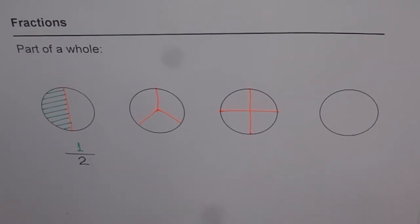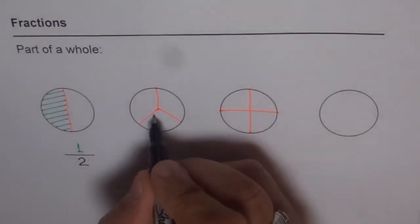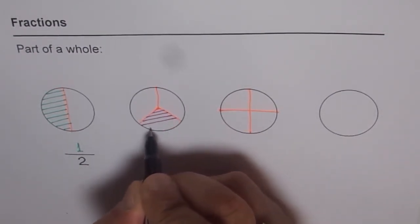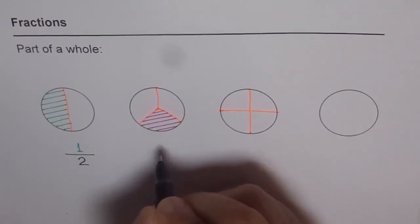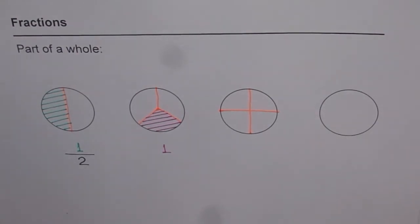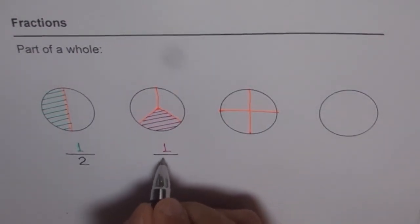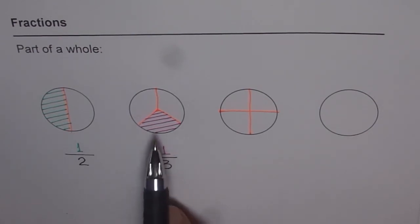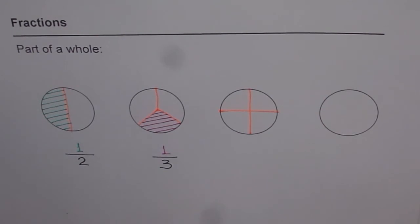Now for the second circle, I will shade one portion here also. What portion have I shaded? I have shaded one portion out of how many? One out of three. So that is another way of looking at fractions — one out of how many equal parts? We say one out of three. We can read this as one-third also. So it is one-third of the whole that is shaded.